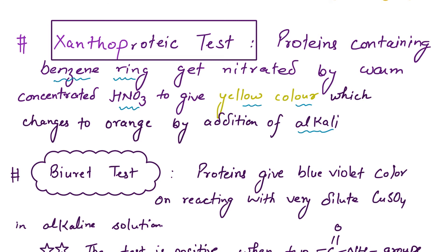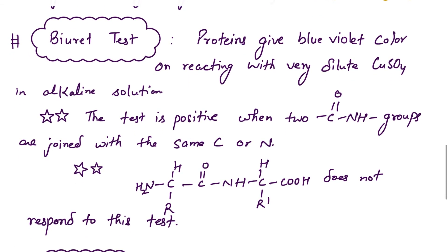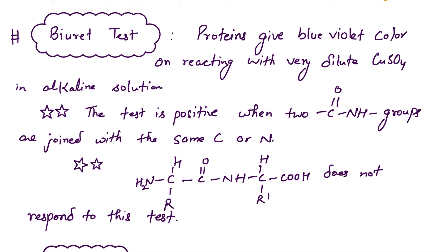Our next test is the biuret test. Proteins give a blue-violet color on reacting with very dilute copper sulfate in alkaline solution. This test is positive whenever two amide groups (CONH groups) are joined with the same carbon or nitrogen. Biuret itself does not respond to this test — it is an exception. The biuret test for proteins gives a blue-violet color.